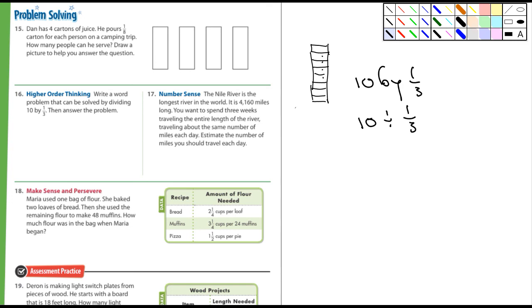Number 17: Nile River is the longest river in the world, 4,160 miles long. You want to spend three weeks traveling the entire length of the river, so estimate the number of miles you travel each day. So three weeks, that's 21 days. That's going to be 21 into 4,160. Well, you could just call it 4,000, and instead of 21 you can call it 20, because they did say to estimate.